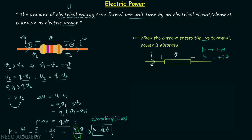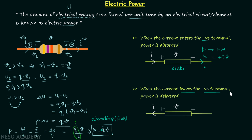Whenever current enters the positive terminal of any circuit element, the power is positive and the element absorbs power — it acts as a sink. If current is entering the positive terminal or leaving the negative terminal, power = +IV. When current leaves the positive terminal or enters the negative terminal, power is delivered and the sign is negative: P = -IV.